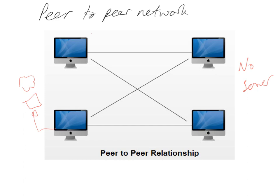The security setup is also different. In a client-server environment, the server controls all security with usernames and logins. In a peer-to-peer network, each computer is responsible for its own security and has to grant access rights to resources on the other computers. So if you wanted to get a file from another computer, you'd have to make sure the security is set up so both computers can talk to each other and allow files to be transferred.